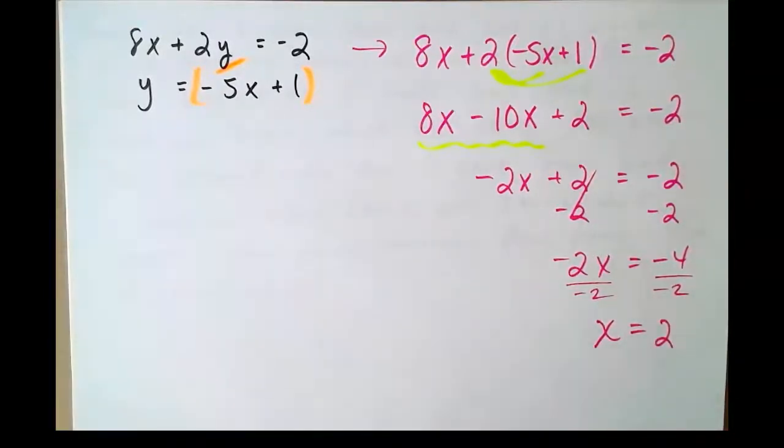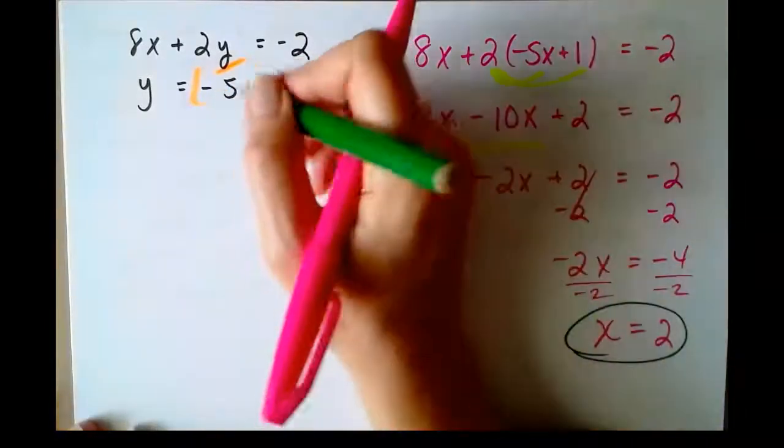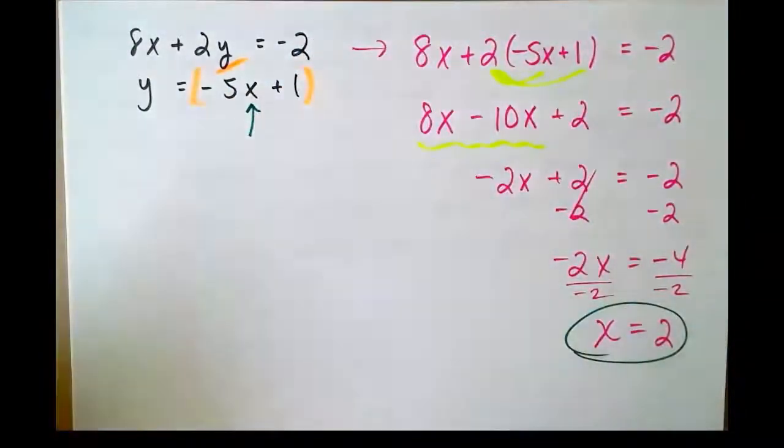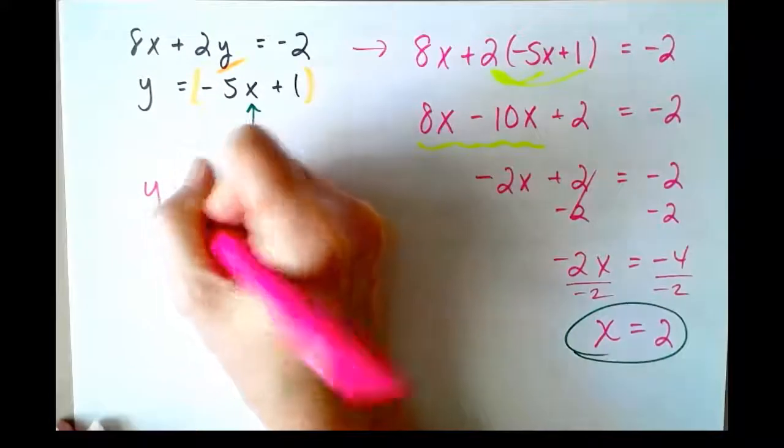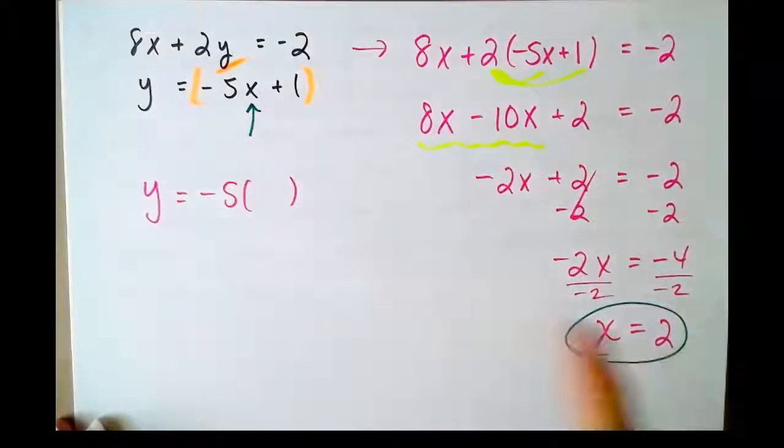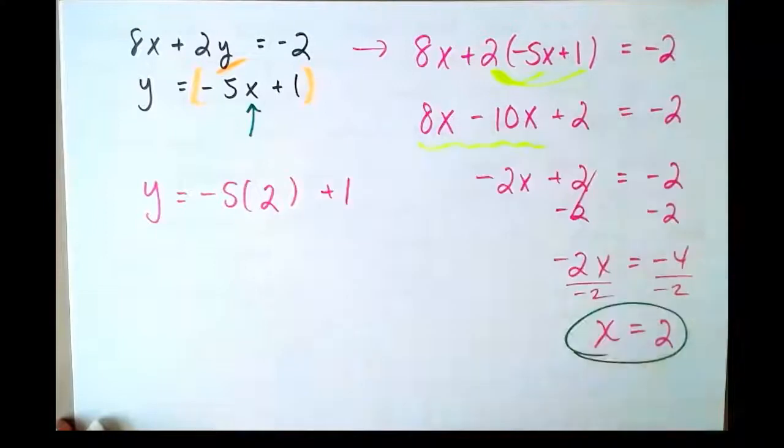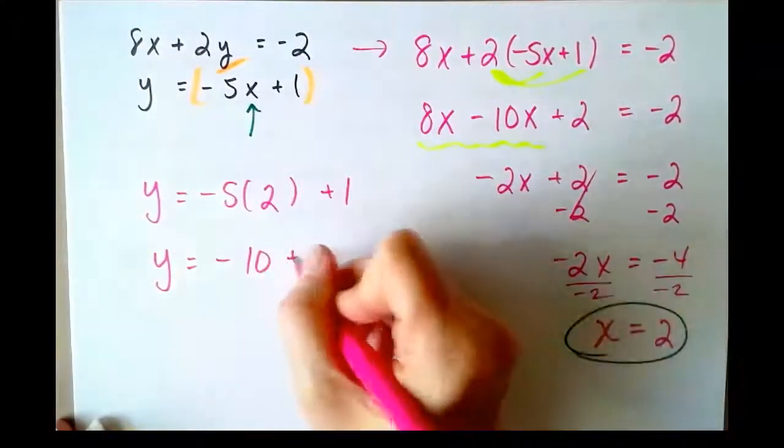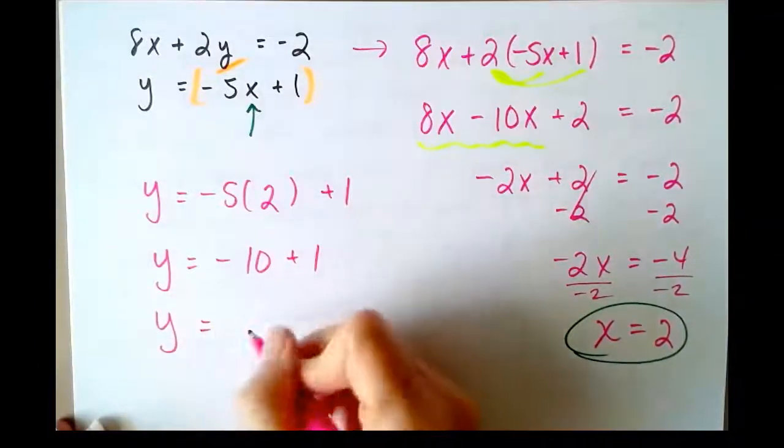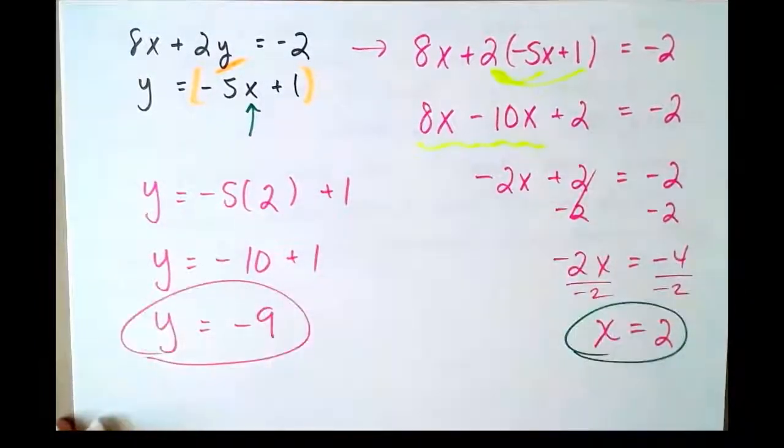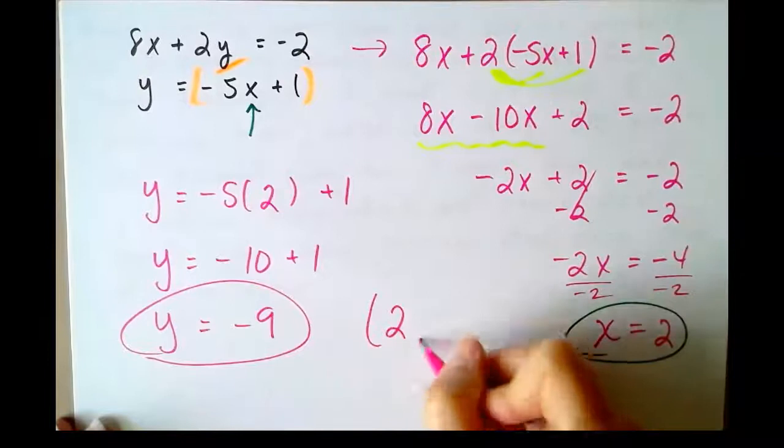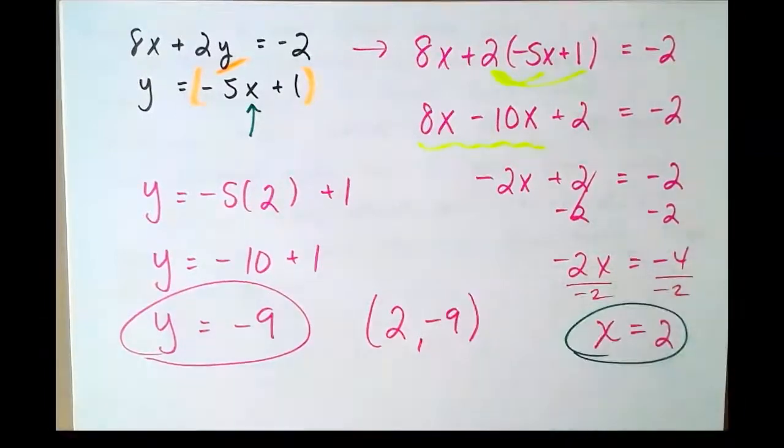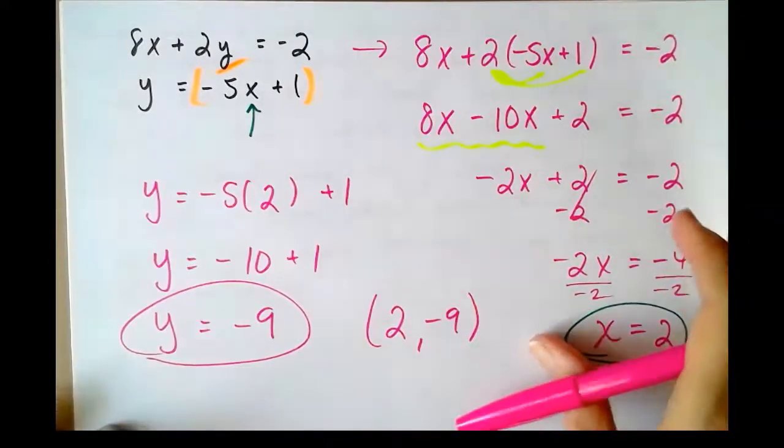Now, in order to find out what y is, we just need to take our value for x and substitute it back in. y = -5 times x + 1. y = -10 + 1. y = -9. There's x. There's y. 2 comma -9 is our point where these two lines would intersect on the coordinate plane.